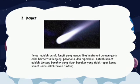3. Komet. Komet adalah benda langit yang mengelilingi matahari dengan garis edar berbentuk lonjong, parabolis, dan hiperbolis. Istilah komet adalah bintang berekor, yang sebenarnya tidak tepat, karena komet sama sekali bukan bintang.